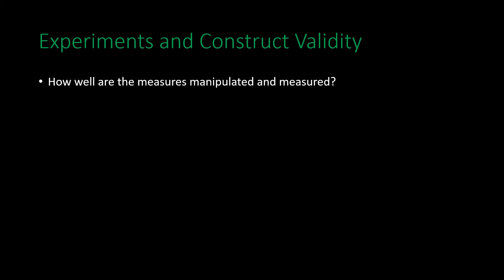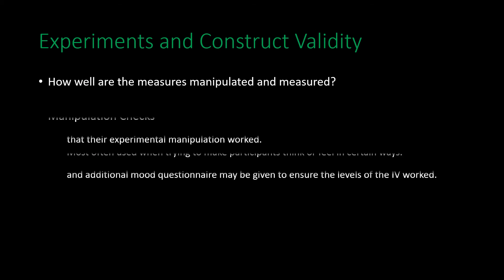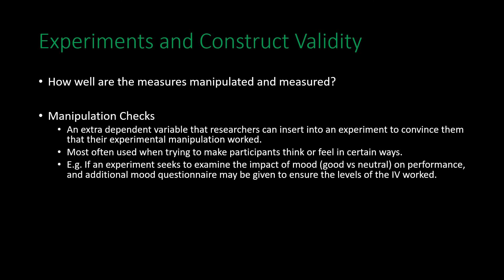Now we'll start talking about experiments and validity. The first is construct validity — this refers to how well variables are measured or manipulated. In experiments, we have the additional benefit of manipulation checks.